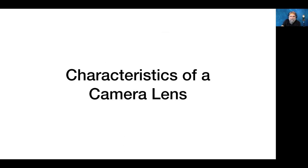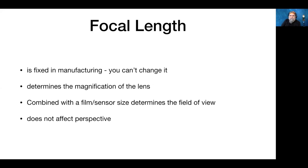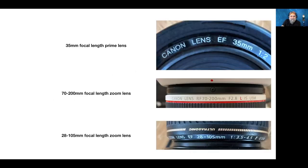Let's start with the basics: focal length. Focal length is fixed in manufacturing — you can't change it. It determines the magnification of the lens and, combined with the film or sensor size, determines the field of view. What it does not do is alter perspective. For example, a 35mm prime lens at f2, a 70–200 zoom at f2.8 constant, and a 28–105 zoom with variable aperture — these are all described differently on the lens.